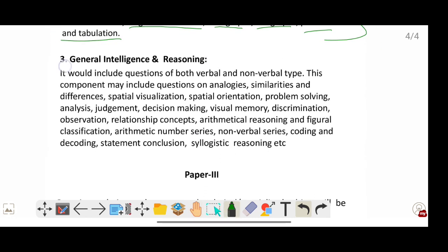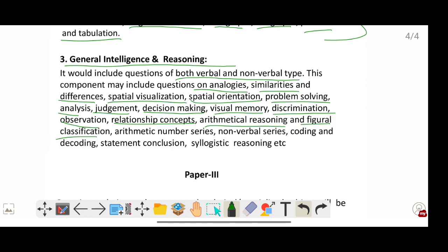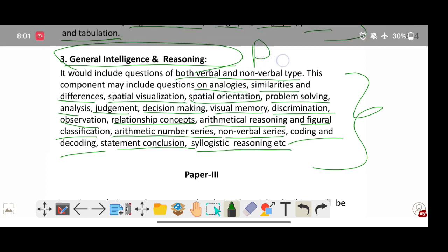The third one, that is General Intelligence and Reasoning. It will include both verbal and non-verbal type. Questions on analogies, similarities and differences, spatial visualization, spatial orientation, problem solving, analysis, judgment, decision making, visual memory, discrimination, observation, relationship concepts, arithmetical reasoning and figural classification, arithmetic number series, non-verbal series, coding and decoding, statement conclusion, syllogistic reasoning. These are the topics under General Intelligence and Reasoning for Paper 2. So Paper 1 and Paper 2 will be for general category.